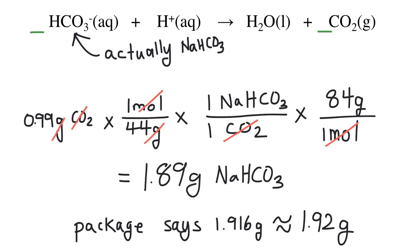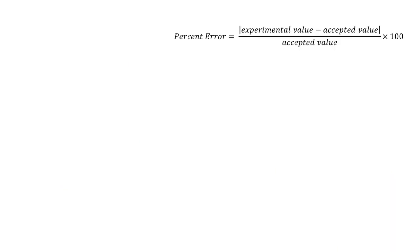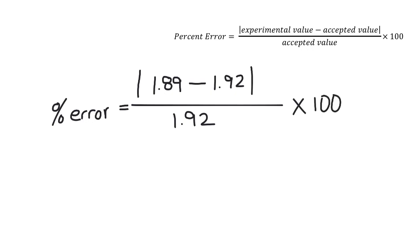So, let's calculate a percent error assuming the package is the accepted value and our value is the experimental value. We'll use this percent error equation. It says that we will take the absolute value of the difference between the experimental and the accepted value here on the top. Absolute value means that if we get a negative value, we'll just turn it into a positive number. Then, we'll divide that difference by the accepted value, and then we'll multiply by 100 to turn it into a percent.